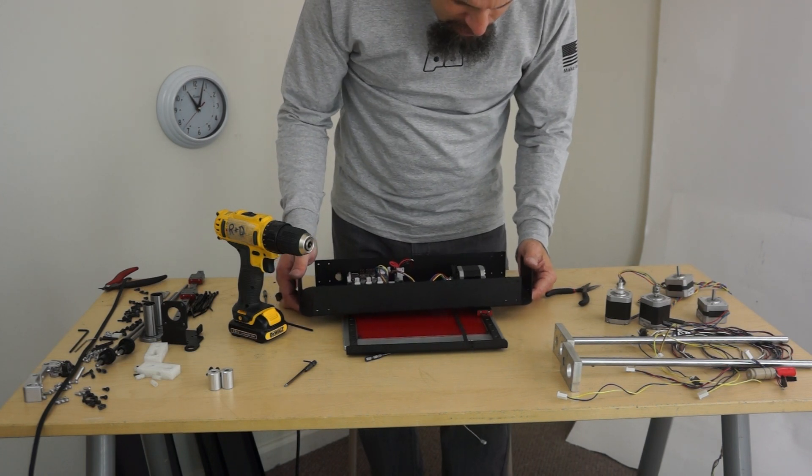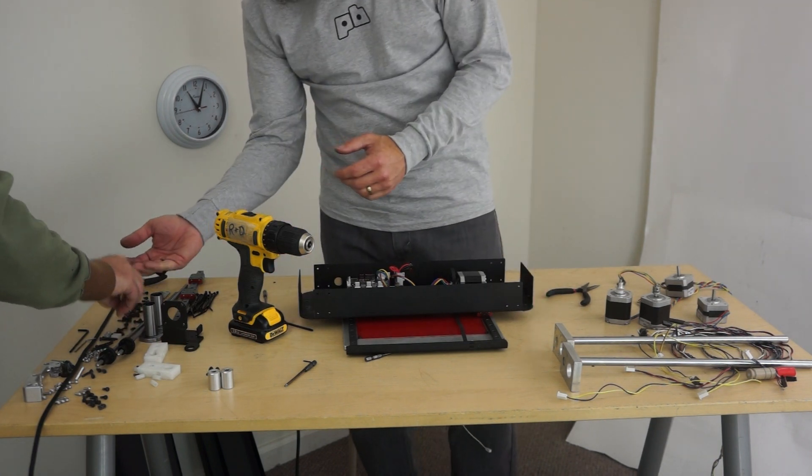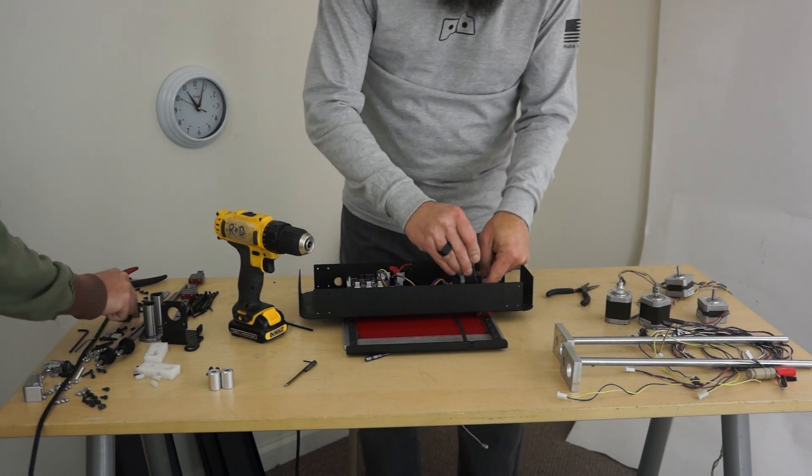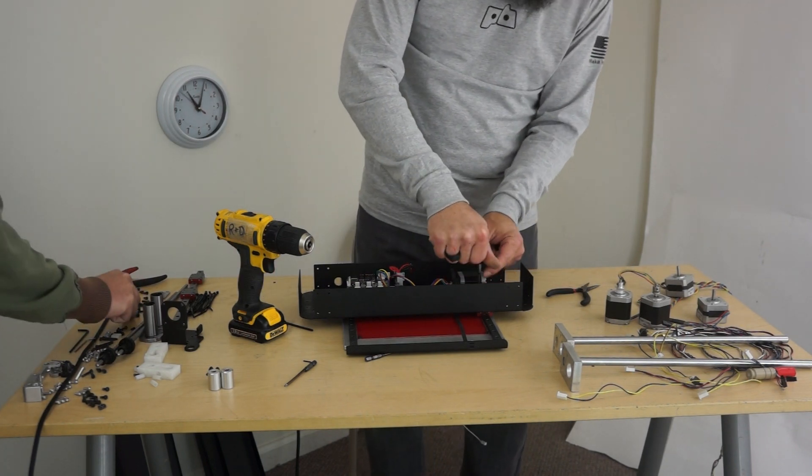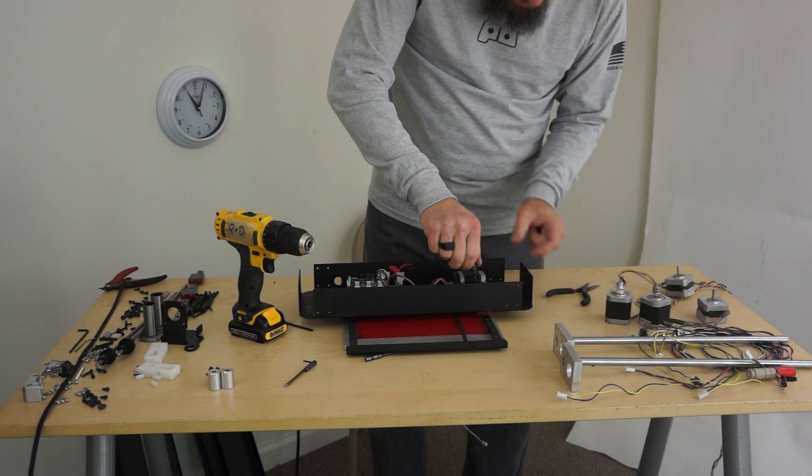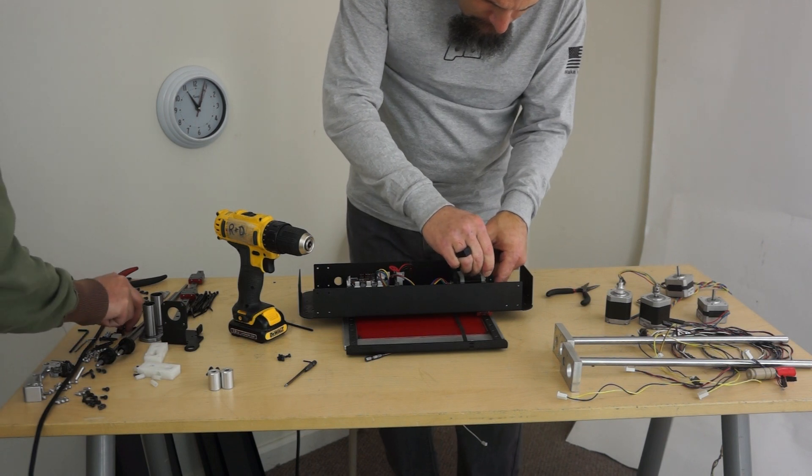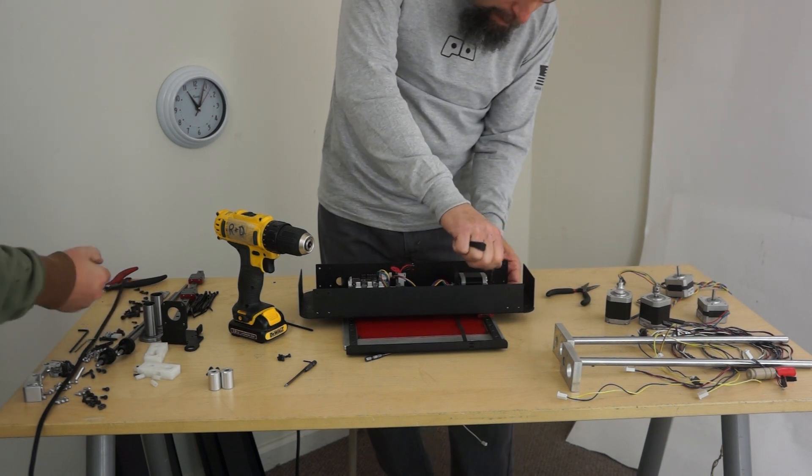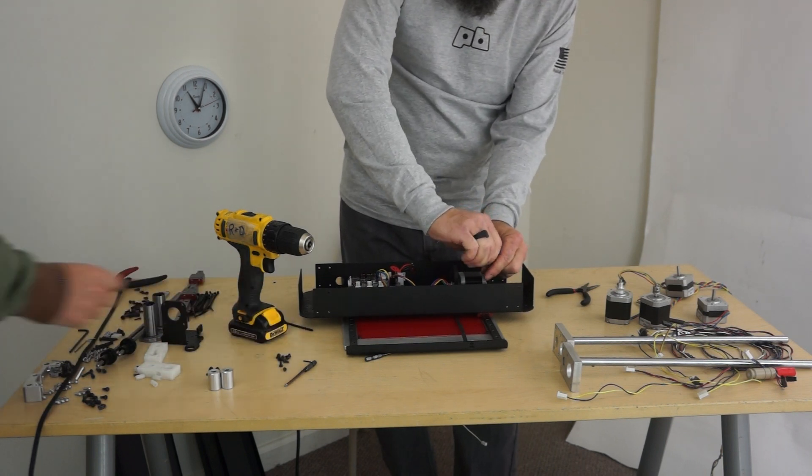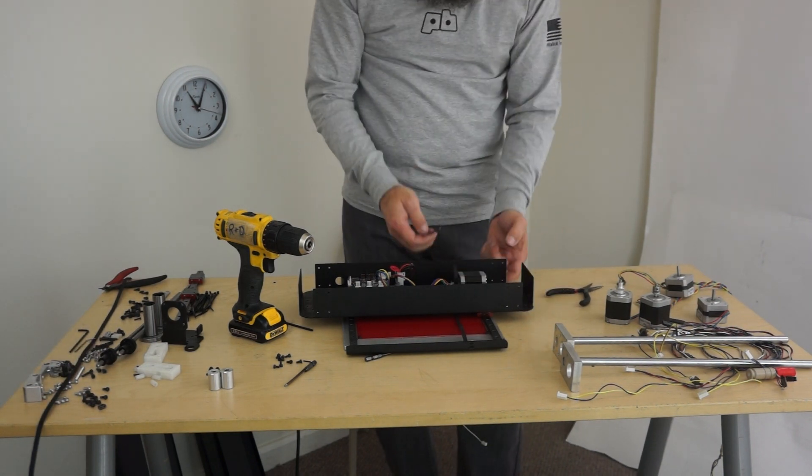All I'm gonna do now is attach the carriages. So I'm just gonna line up one of the carriages, and these carriages, we're gonna put in, what are these? Six. These carriages you want to be real gentle with, so I'm just gonna put them in hand tight unless they fight me and then I'll use the screw gun. I can tell they haven't been threaded.